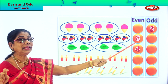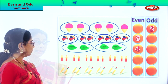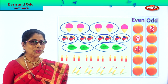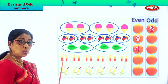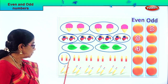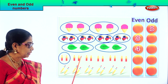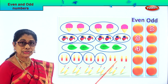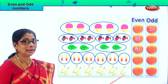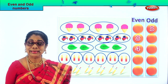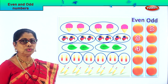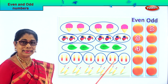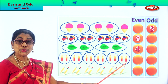Number four is an even number, number eight is an even number. Now let's look at the candles — count, circle them, and find if it is odd or even. One, two — circle; one, two — circle; one, two — circle; one, two — circle; one, two — circle; one, two — circle. Nothing left, everybody got a partner. Count in twos: two, four, six, eight, ten, twelve. Twelve is an even number.